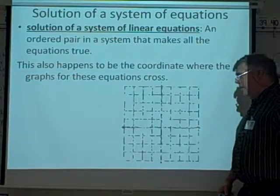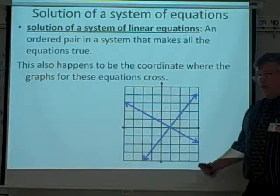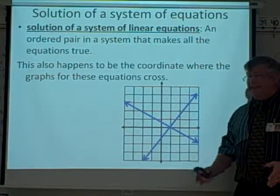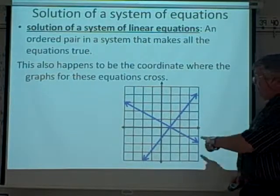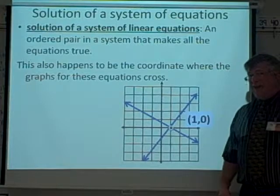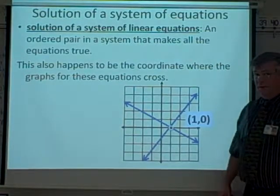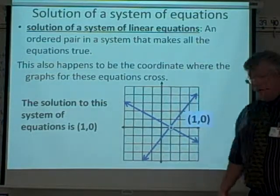So if you've got two equations, you've got two graphs, and these two lines here, where they cross, that is the solution to this system of equations. So that point right there, one comma zero, that is the solution to this system of equations. So if you're asked what the solution is, you would say one comma zero.